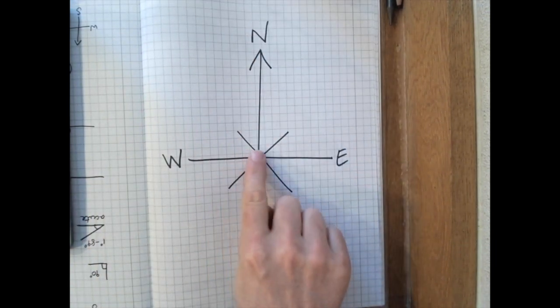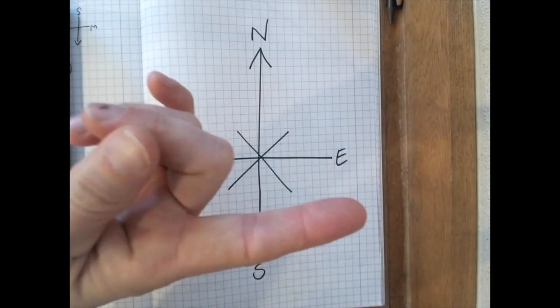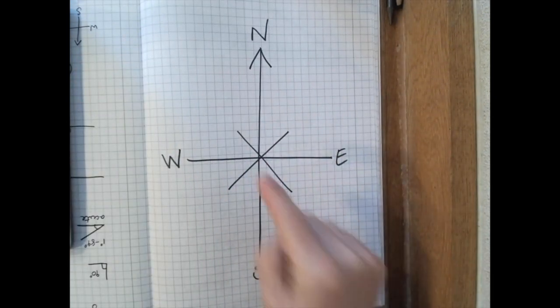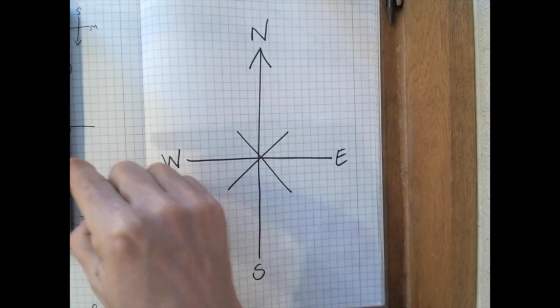If you're facing north and you look to your right-hand side, that way, you'll be looking to the east. If you're facing north and you look to the left-hand side, that will be the west.